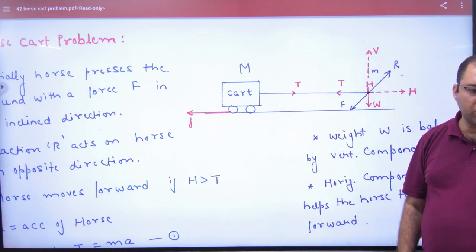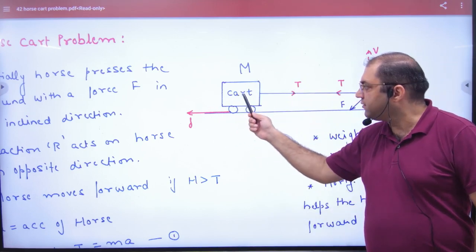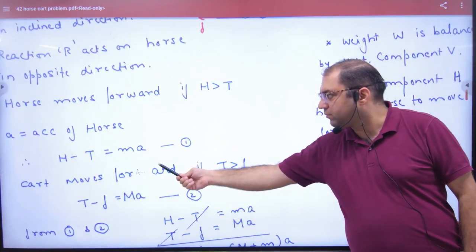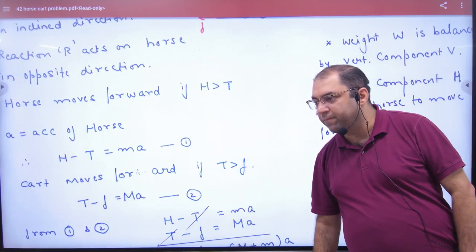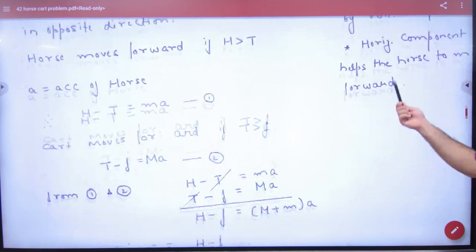Let's write the equations. For the cart: T minus F equals M times A. So T minus F equals MA. And for the horse, the horizontal force is H and the backward force is T, so H minus T equals small m times A. H minus T equals ma.